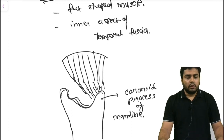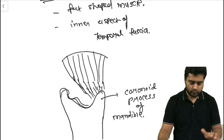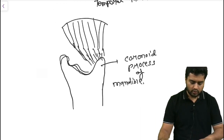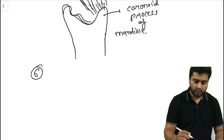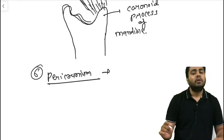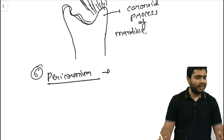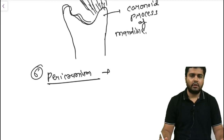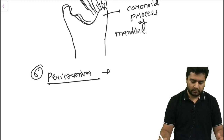The sixth layer is the pericranium, which is the same as in the scalp — tightly adherent at the sutures and loosely attached at the body part.